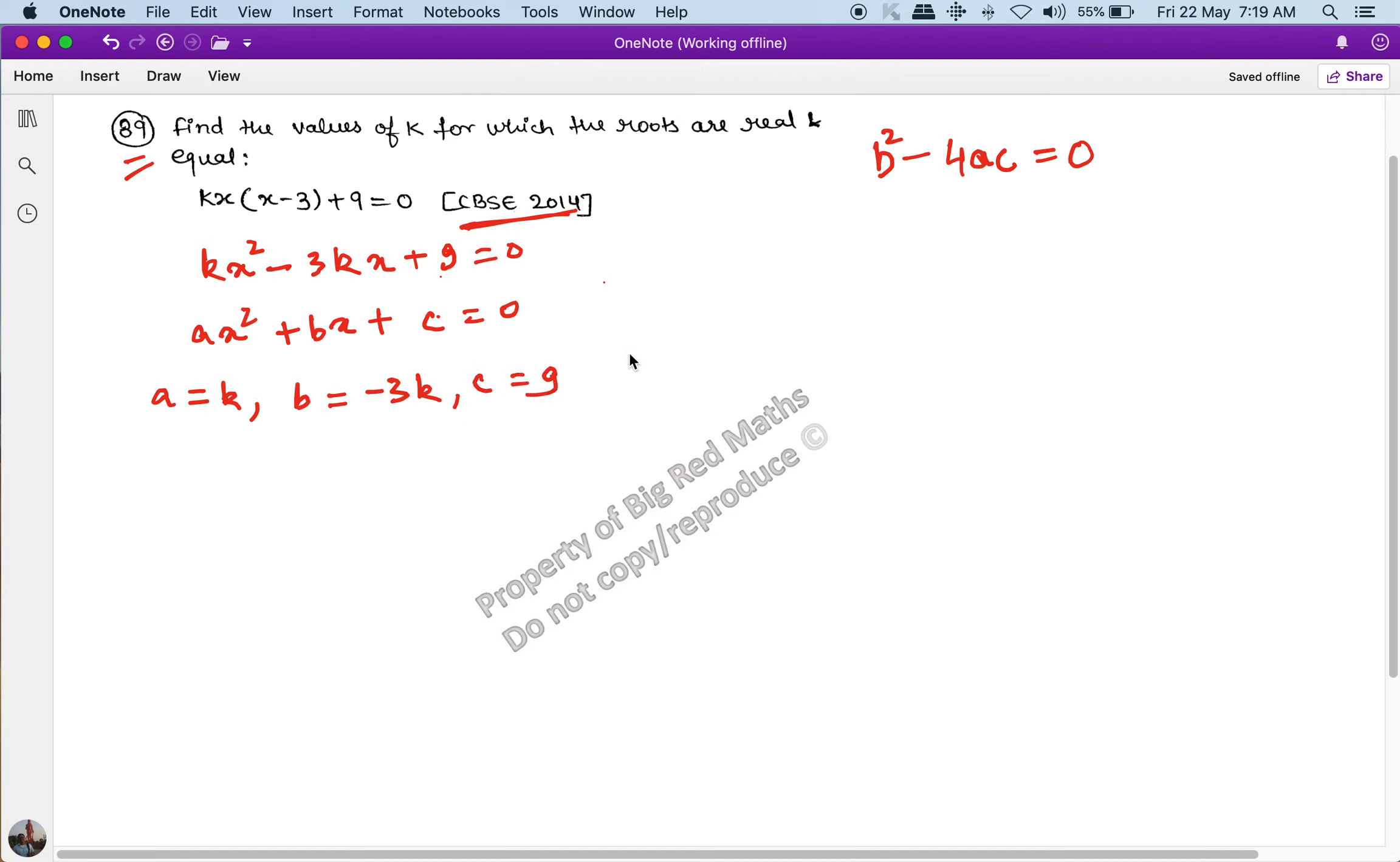Comparing the coefficients: a equal to k, b equal to minus 3k, and c equal to 9. Now we will keep these values here. b² minus 4ac is equal to 0, should be equal to 0.